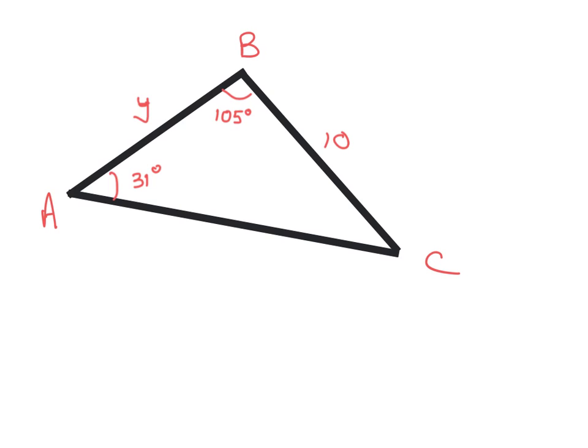We know that 10 over sine 31 equals Y over sine C, because we've got 10 is opposite 31, and obviously Y is opposite C.